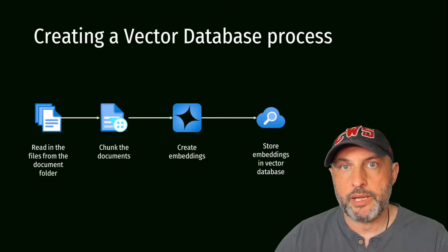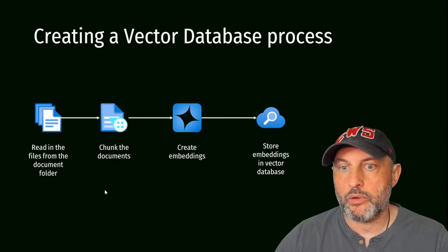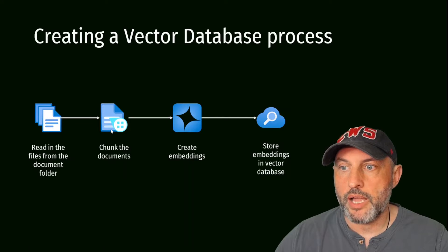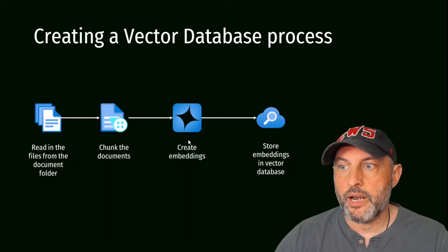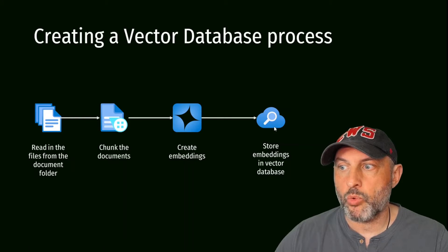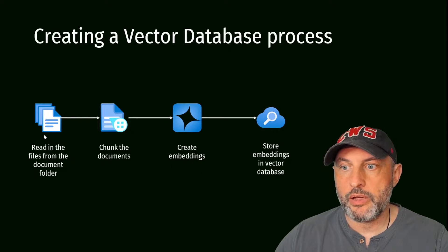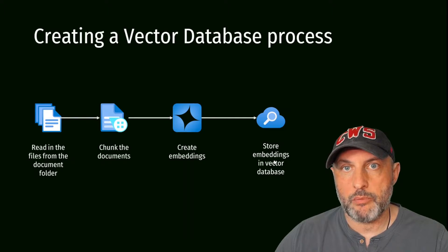Let's look more closely at converting files into embeddings. We read everything from the document folder, then use an Azure technology called Document Intelligence to chunk the document and prepare it for embedding creation. We then use another LLM model specifically designed to create embeddings — converting chunks into digital numeric format. Those numbers are stored in an Azure AI Search index, which serves as our vector database. The full process is: read documents, chunk documents, create embeddings, store in the vector database, then run queries to retrieve relevant information.